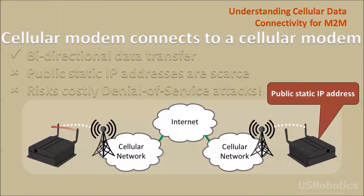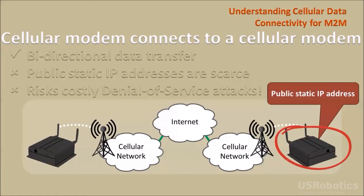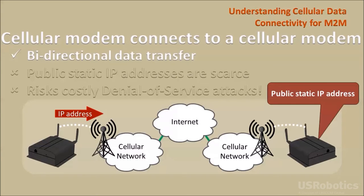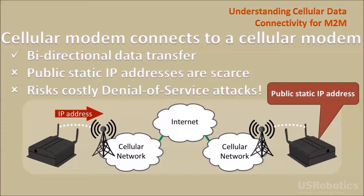If an application requires a cellular modem to connect to another cellular modem, one possible solution is to provision the destination modem with a public static IP address. Once the connection is made, data can transfer across the connection in either direction. While this approach is achievable technically, it may not be practical. Public static IP addresses are not available from all cellular service providers or may cost extra. Also, a cellular modem at a public IP address on the internet is vulnerable to denial of service attacks, which can cause expensive overage charges on your cellular data plan.